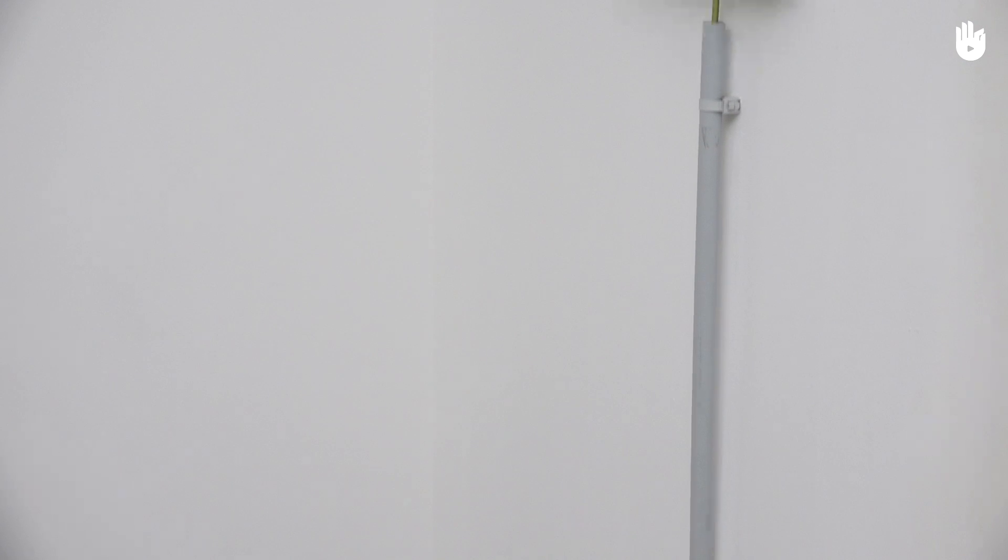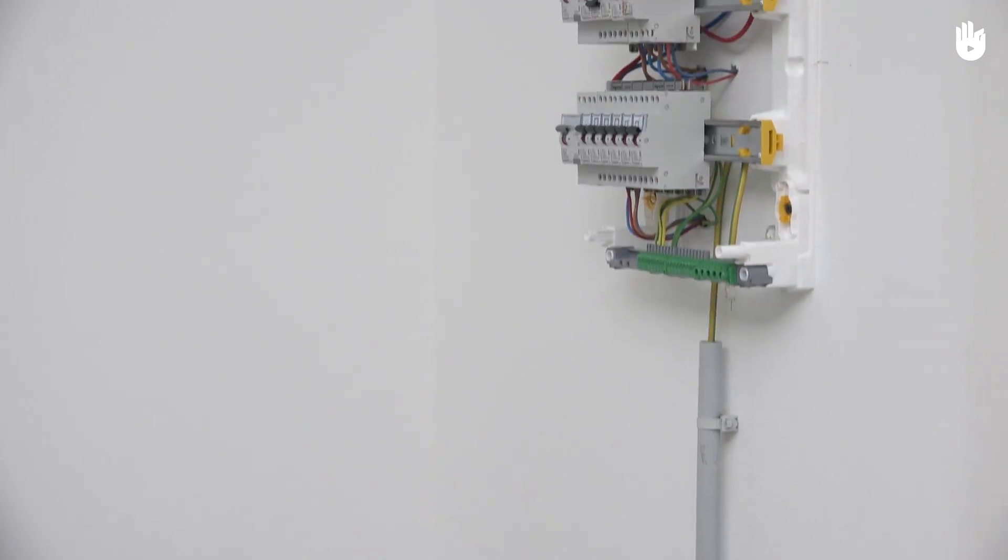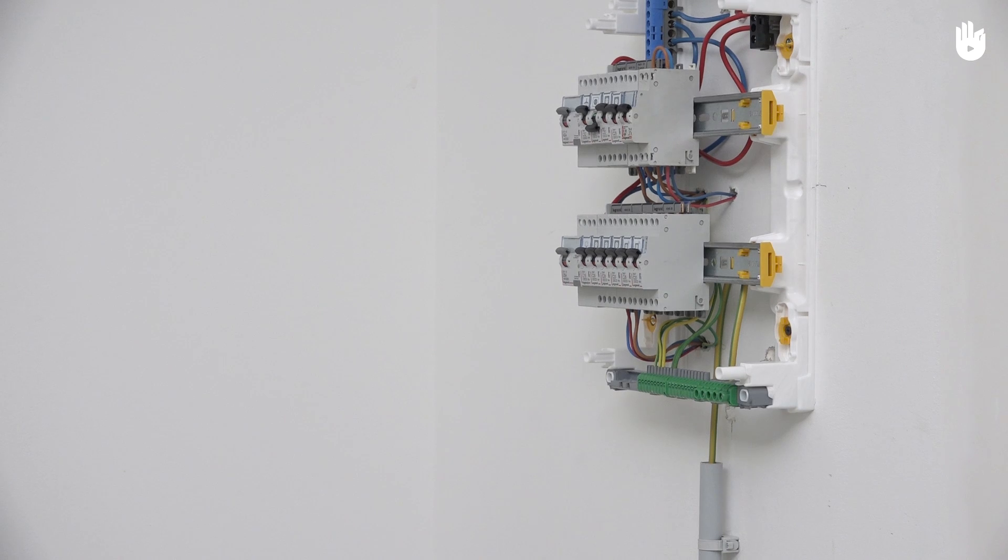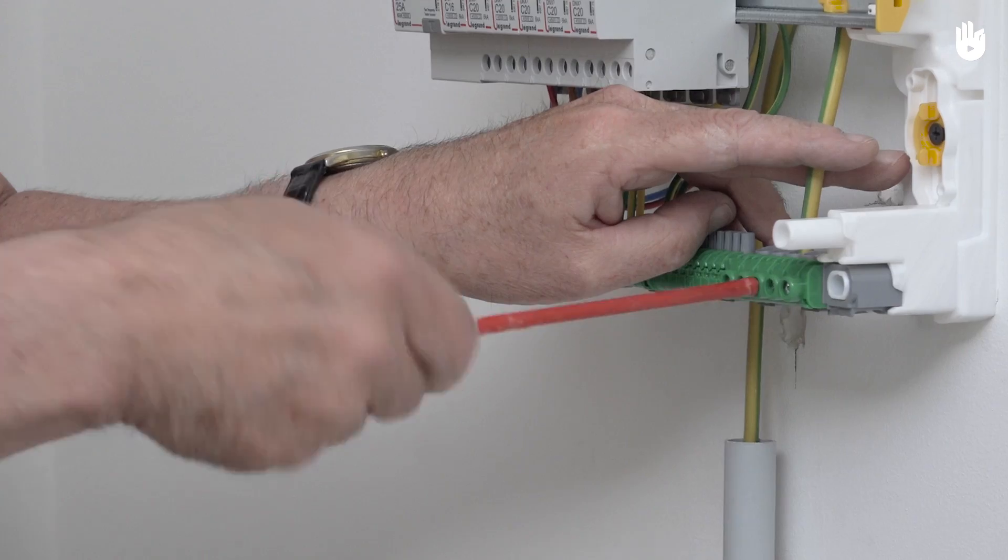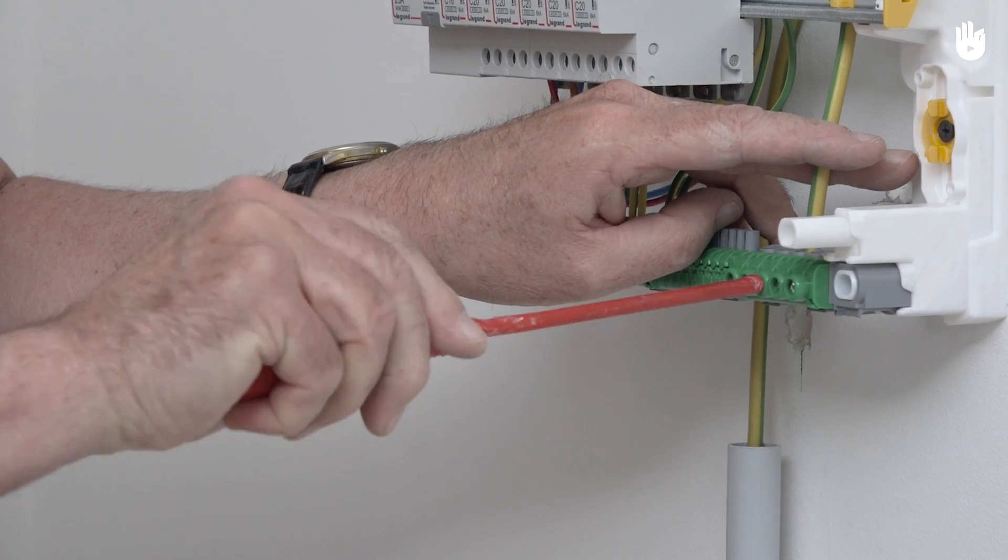In this video, you will learn how to connect a ground connection to an electrical panel. The ground connection makes it possible to dispose of fault currents, in other words, when metallic masses accidentally become live.